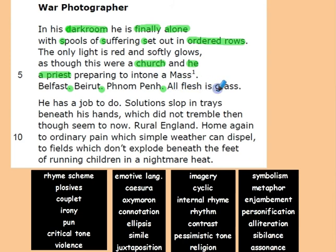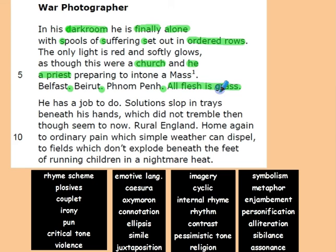'All flesh is grass.' This is biblical, and it means human life is very short and fragile. But in this poem it has a deeper meaning — when there is war, human life becomes even shorter. Sometimes when they kill loads of people they just leave them in the battlefield without burying them. Their dead bodies and flesh eventually become part of the ground in the form of grass. So all flesh is grass.